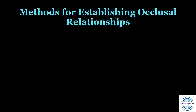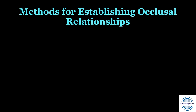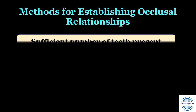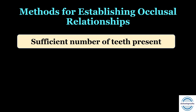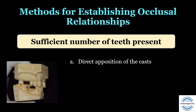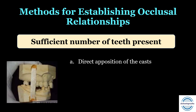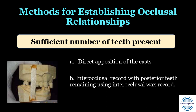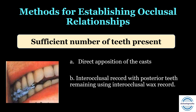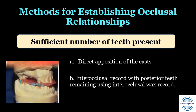The method for establishing the occlusal relationship depends on the number of remaining teeth. If there are sufficient teeth present, two options exist. First is direct apposition of the cast — if at least three to four positive contacts are present between the posterior natural teeth, the casts can be opposed by hand and secured with sticky wax or a wooden stick. The second option is making an inter-occlusal record using aluminum-reinforced wax called Alu-wax. This second option is used when the relation of opposing natural teeth does not permit occluding the casts by hand.